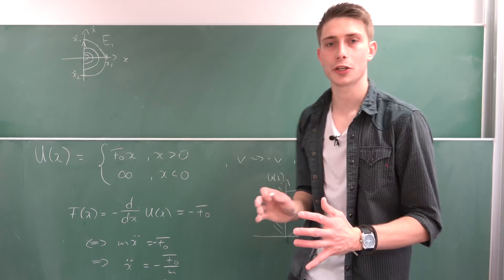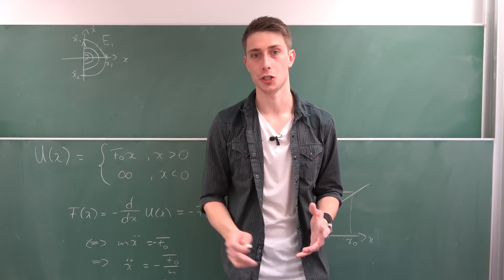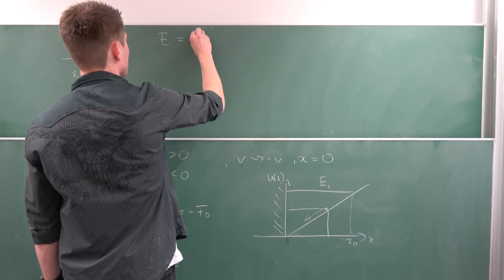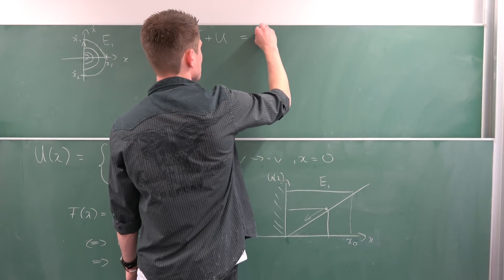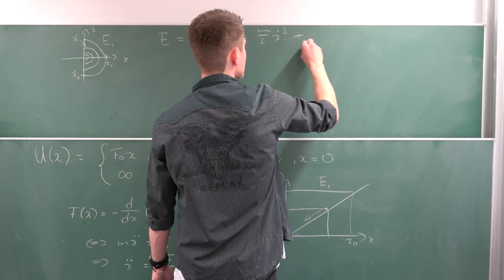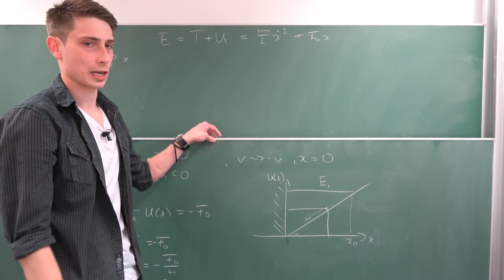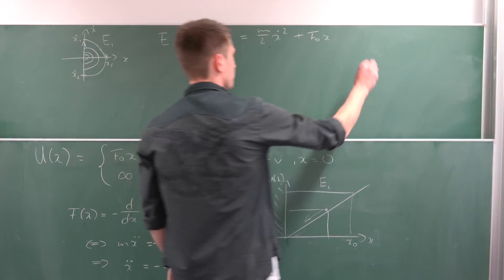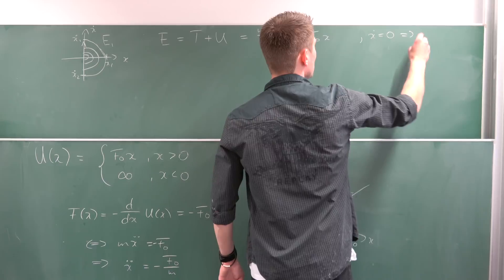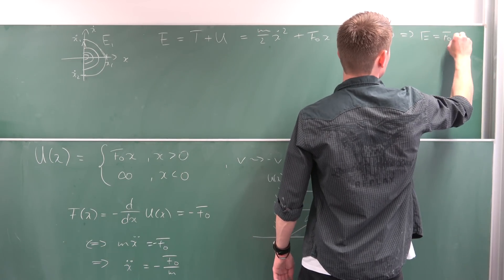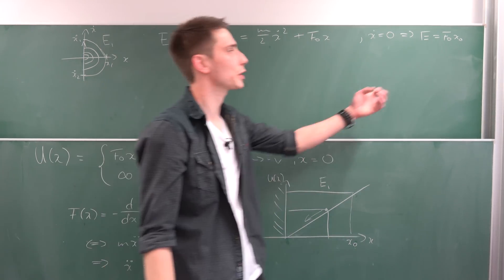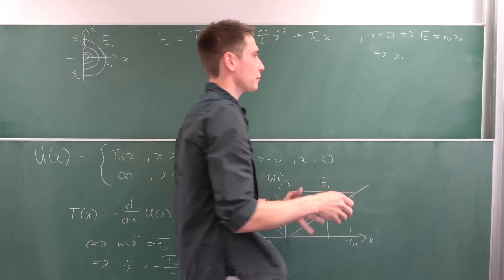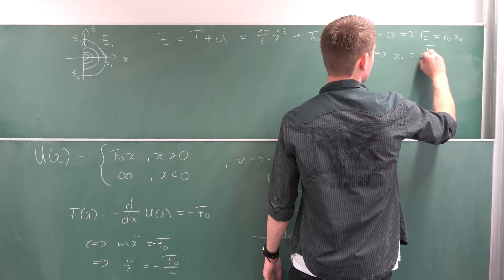The last exercise is to find an expression for the period time in terms of the energy. Let's construct the energy: E equals kinetic energy plus potential energy, which is m over 2 times x dot squared plus f0 times x. At the classical turning point, the velocity is zero, so E equals f0 times x0. Dividing both sides by f0 gives x0 — the classical turning point — equals E over f0.